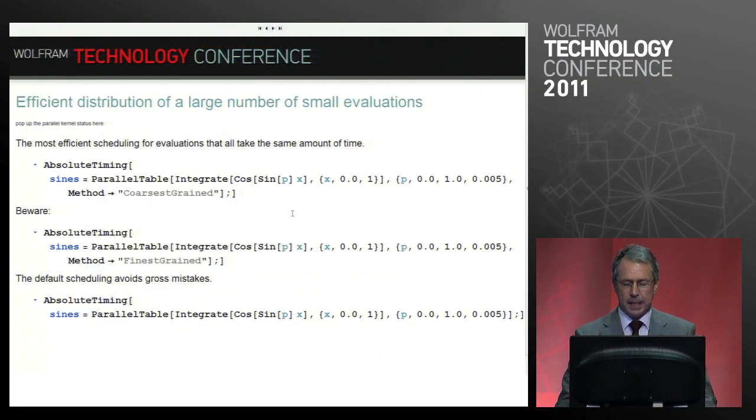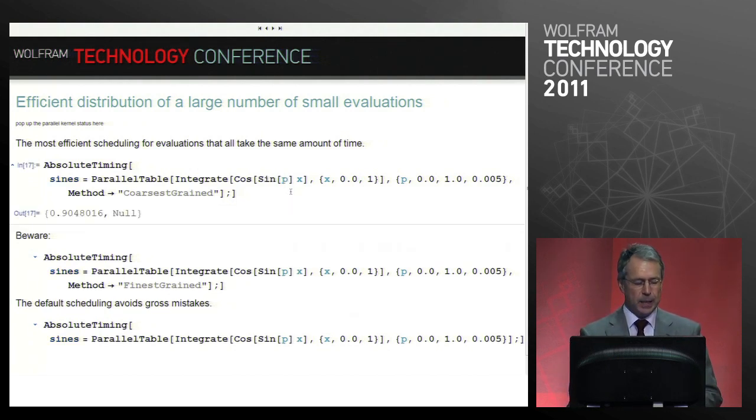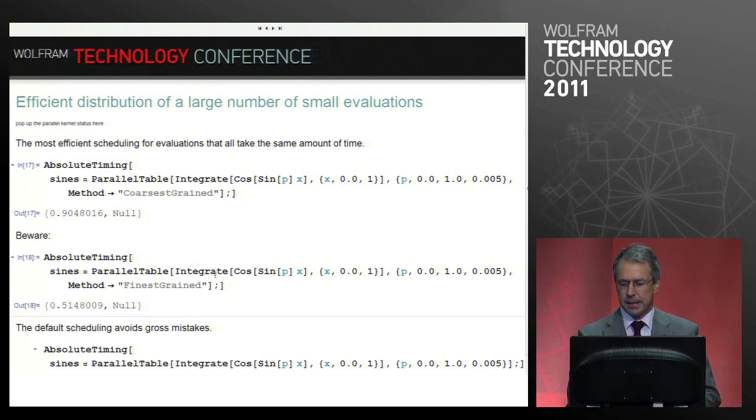Now the other extreme is a large number of very small evaluations. Here I did something not exactly trivial, integrate of something. The sine p is just here to disturb the input a little bit so that I don't get the numerical caching at work. The second time you try something it is instantaneous because Mathematica is quite clever, remembering things, and I don't want that here. In the coarsest grain case, one evaluation for each kernel is the least amount of communication. If you do it the other way around, then it will generate a lot more.